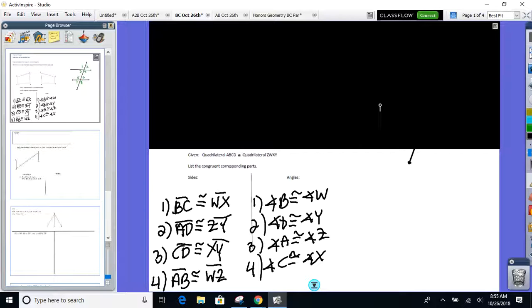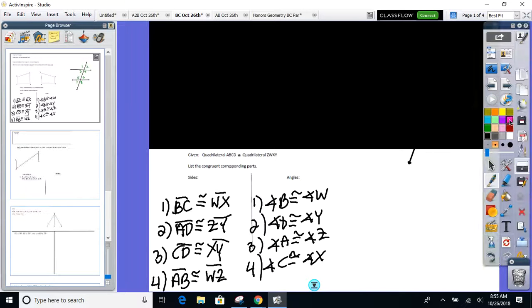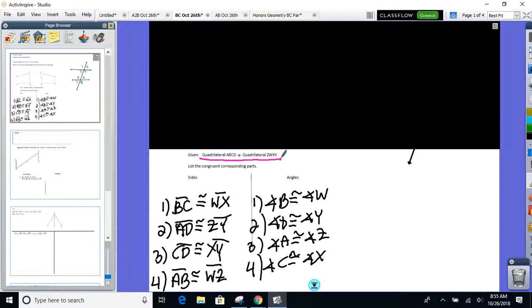Here's how I knew you were right or wrong when you gave me the corresponding parts. I looked at this statement right here. I looked at this statement. This right here, first of all, this right here is called a congruent statement. You'll be asked to write these on your own later today and over the weekend in homework. This is called a congruent statement. This polygon is congruent to this one. Now, how did I use that to figure out if you guys were right or wrong?